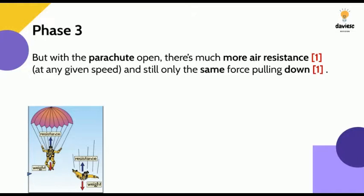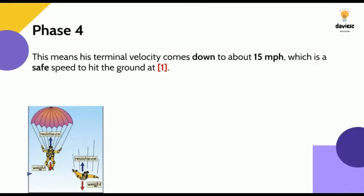Phase three: when the parachute is open, this means that his area above him is much higher, so there is more air resistance at any speed but still the same force pulling him down. Therefore we have a greater force upwards than downwards - saying this is worth two marks. And the final mark says that because of this, his terminal velocity reduces to a safe speed of 15 miles per hour to hit the ground. In all, that's worth five marks.